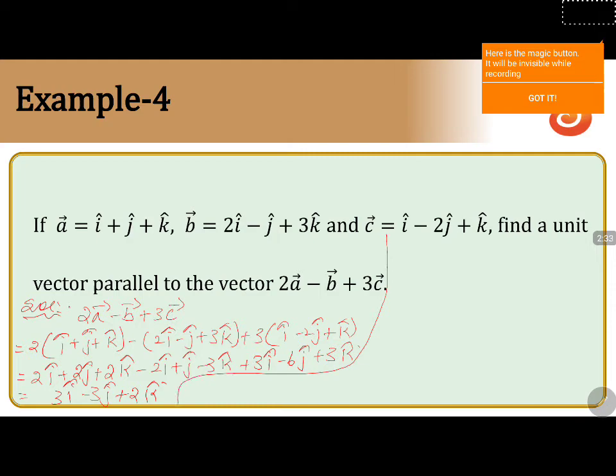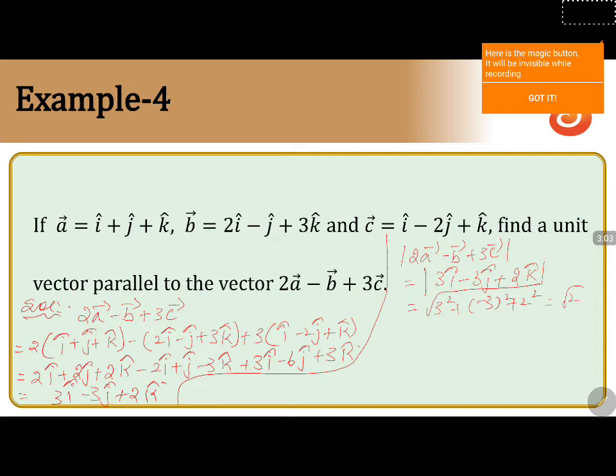Now we will calculate the magnitude of 2a vector minus b vector plus 3c vector, which equals the magnitude of 3i cap minus 3j cap plus 2k cap. That equals the square root of (3 squared plus 3 squared plus 2 squared), which is the square root of (9 plus 9 plus 4), giving root 22.